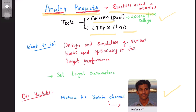An overview of any analog project is to design or simulate a block — for example, an opamp or an LNA — and optimize it for target performance. Initially we set some target parameters and try to achieve them by optimizing the circuit. For example, in the case of a low noise amplifier, we try to optimize the noise figure of the circuit.